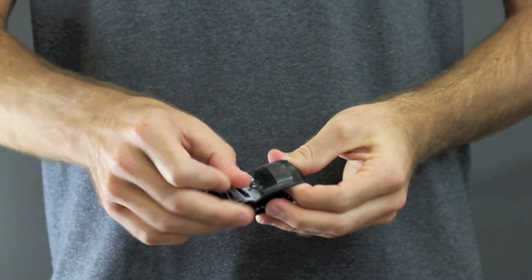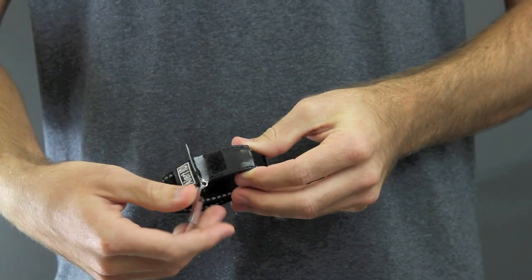The USB drive attaches to the bracelet, and it's easily concealed in the water-resistant USB pocket.